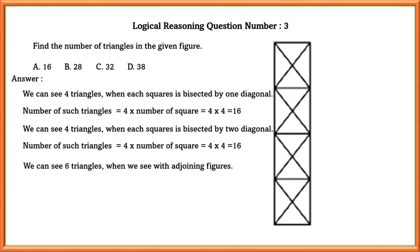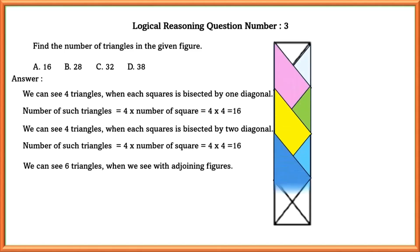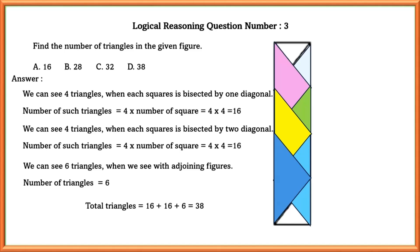We can see 6 triangles when we look at the adjoining figures. So total triangles equals the number from squares bisected by one diagonal, two diagonals, and with adjoining figures — that is 38.